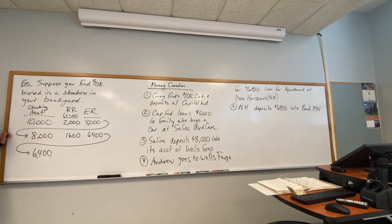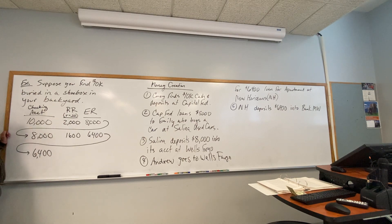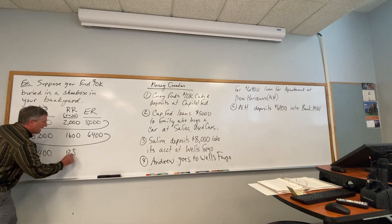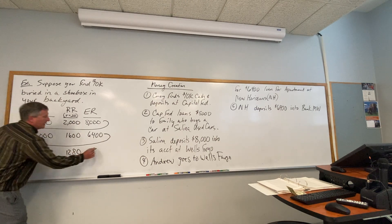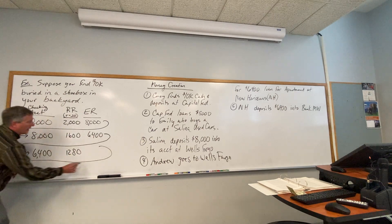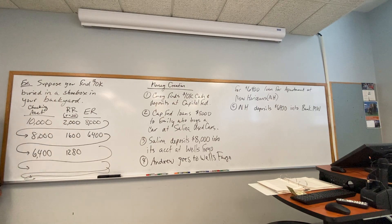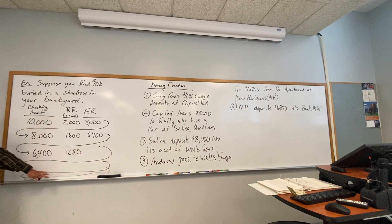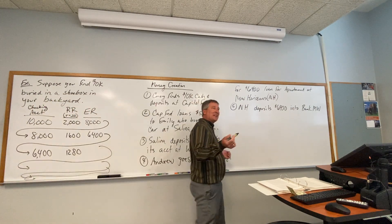This leads to another round of multiplication — 20% of $6,400 is $1,280 that has to be held back, and the rest can be loaned out, and loaned out, an infinite number of times, all the way down until it becomes a penny or something.